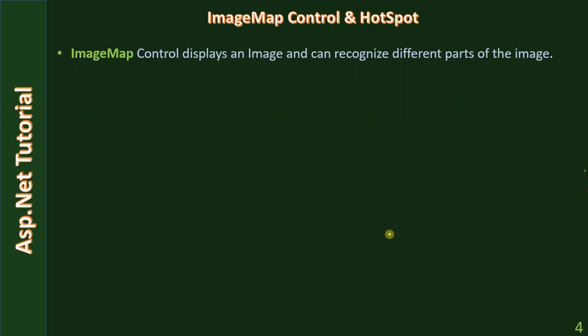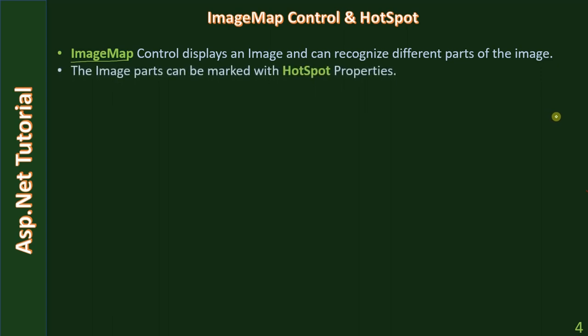The image map control displays an image and can recognize different parts of the image. So whenever an image contains multiple parts and if you want to respond to each and every part of the image, you can define an image map control and display the image in it. Then using the hotspot you can define different parts of the image — the image parts can be marked with hotspot properties.